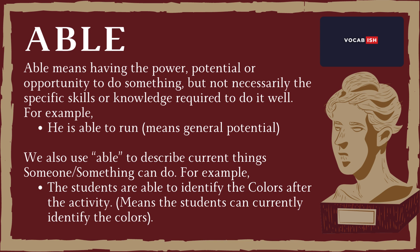Able means having the power, potential, or opportunity to do something, but not necessarily the specific skills or knowledge required to do it well. For example, 'he is able to run' shows general potential. We also use able to describe current things someone or something can do. For example, 'the students are able to identify the colors after the activity' means the students can currently identify the colors.